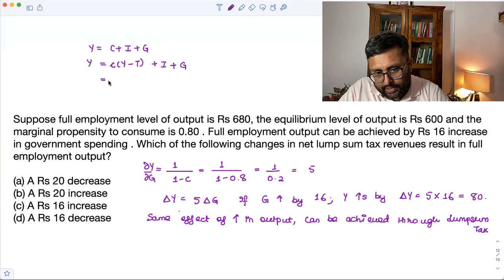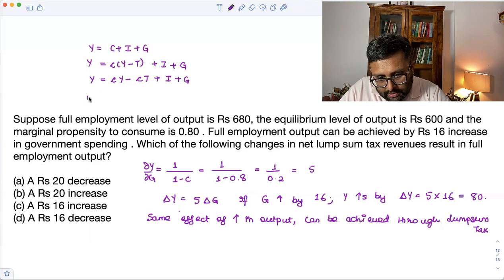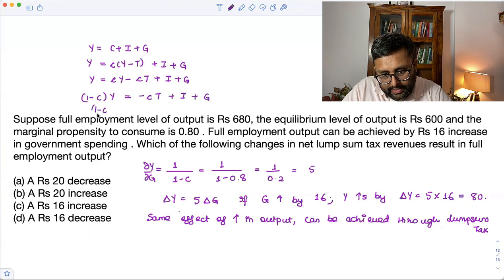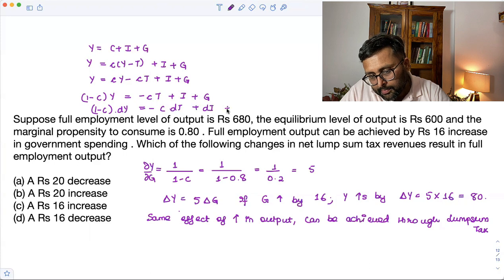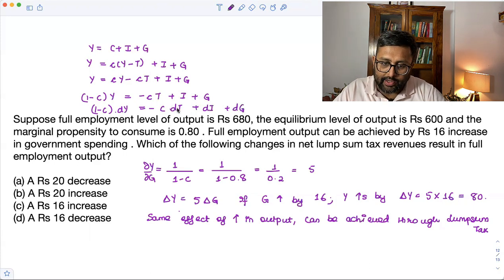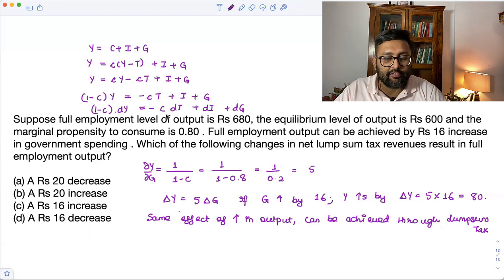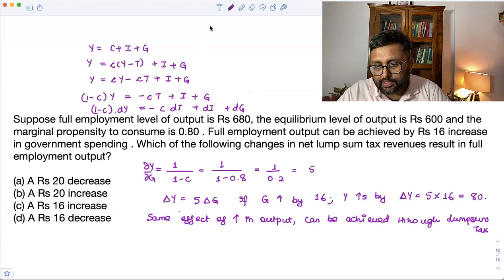So I can write this as (1 minus C) dY equals to minus C dT plus dI plus dG. So if I want to find out that if the taxes are going to change, how that is going to affect the output. So dY by dT, I need to find out now. So I will be assuming,